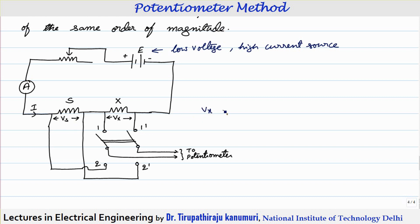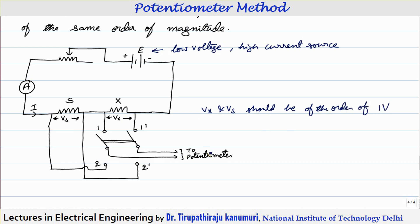The current should be very high so that the voltage drops Vx and Vs across these resistors are of the order of 1 volt, which can be easily measured by a standard potentiometer, since the potentiometer can measure around this voltage easily.